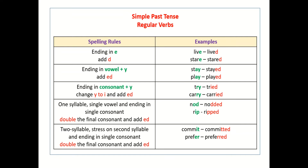And if the verb is just one syllable, with a single vowel and ending in a single consonant, just double the final consonant and add ED — like nod → nodded.